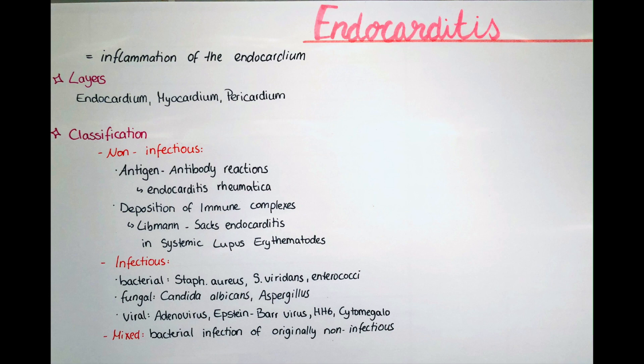The infectious endocarditis can be bacterial, subdivided into acute or subacute — with a duration of less than two weeks or just a few days in the acute form, and more than two weeks in the subacute form. The acute form is often caused by Staphylococcus aureus, especially in IV drug users. The subacute form is often caused by streptococci of low virulence, for example Streptococcus viridans, and also by enterococci.